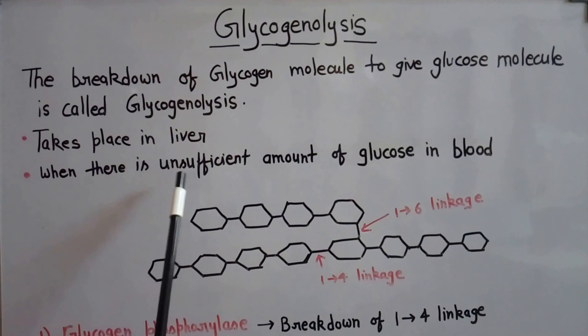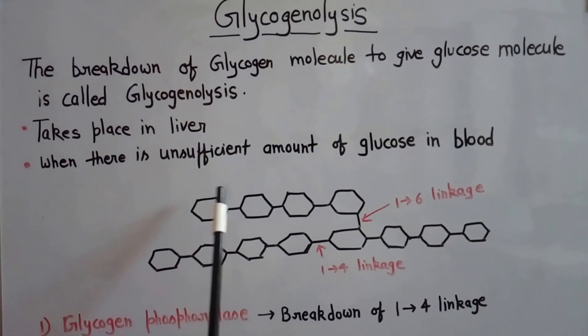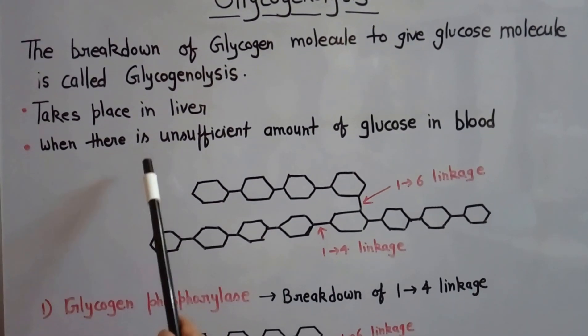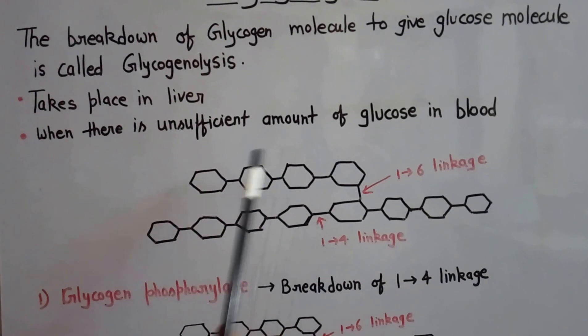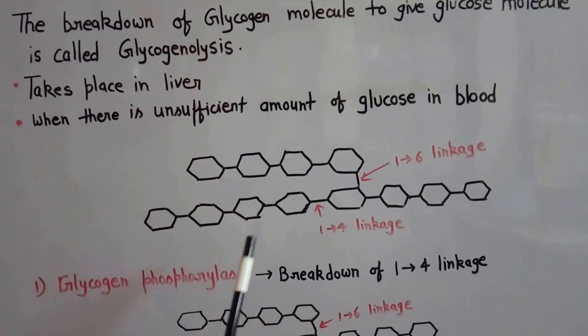This process takes place in liver when there is deficiency of glucose in blood. The liver converts glycogen to glucose. The process takes place in three major steps.